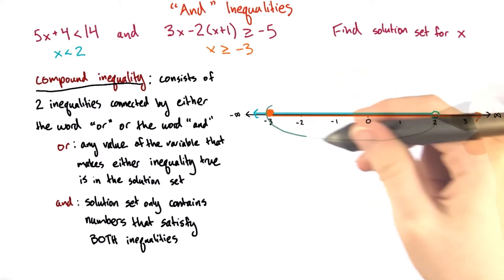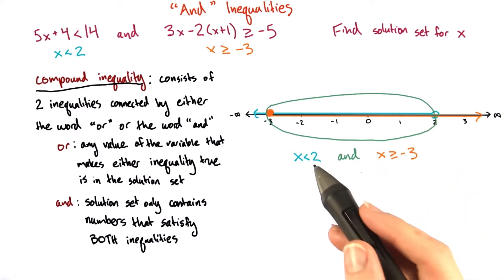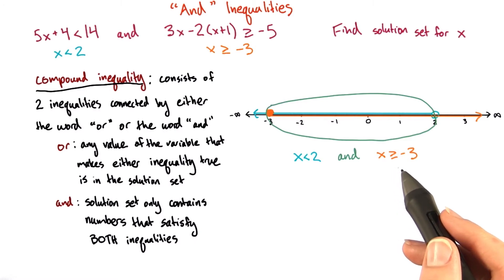So, here to here. The part of the number line that I just circled is everywhere where x is less than 2 and x is greater than or equal to negative 3.